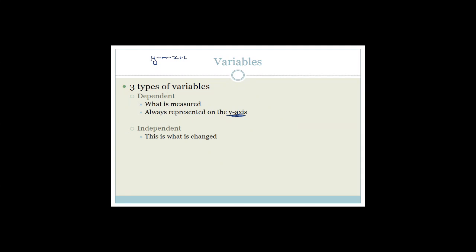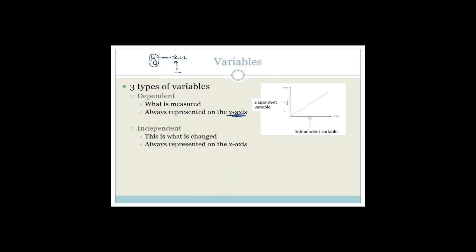The independent variable is the thing that's changed — we change the x value to get a y value. For example, if we relate the amount of water to the growth of a plant, x would be the amount of water added and y would be how tall the plant got. So the dependent variable is always on the y-axis and the independent variable is always on the x-axis. Time is almost always the independent variable, but not always.